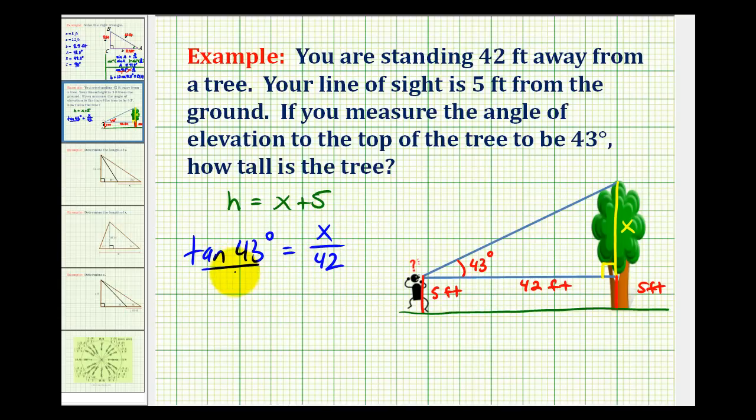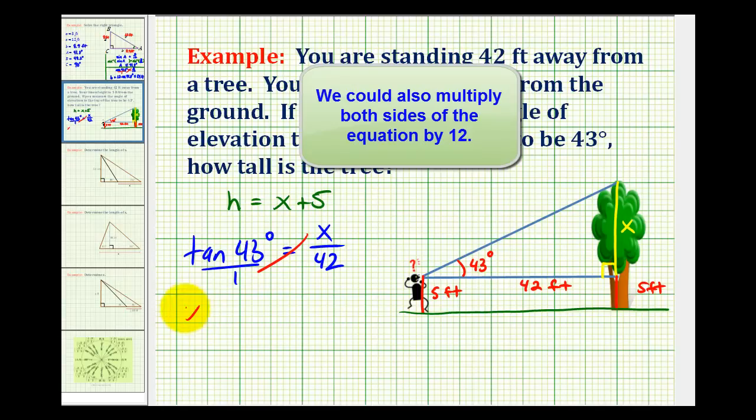Now if we make this a proportion, we can cross multiply and solve for x. x times one would be x, must equal 42 times tangent 43 degrees.